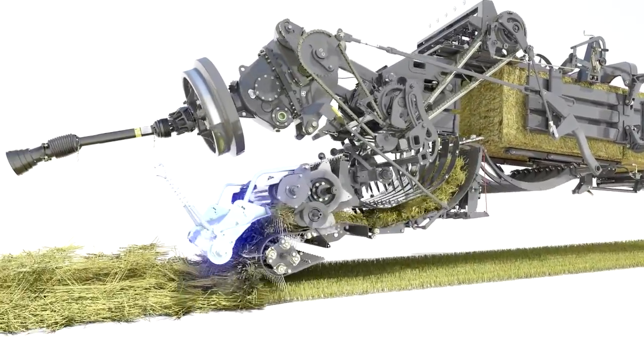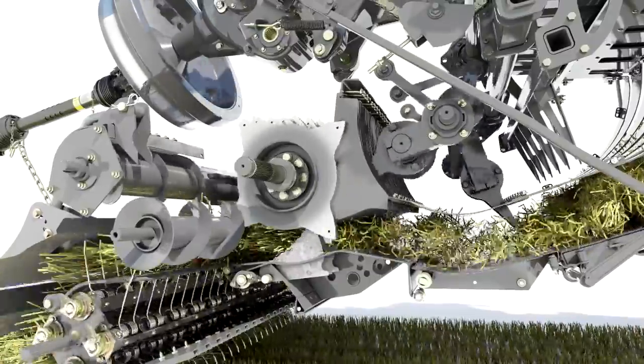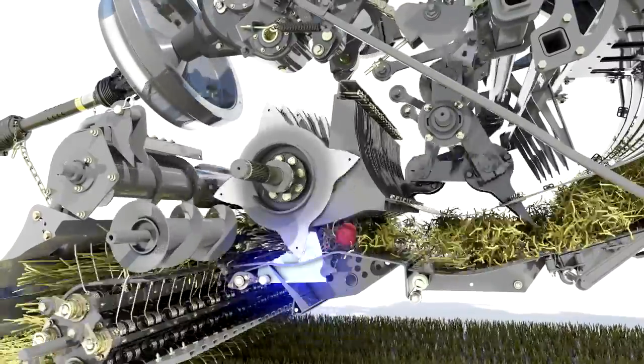Crop enters the cutter unit and is sliced into consistent lengths as it feeds over a set of stationary sprung knives.